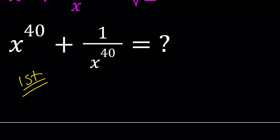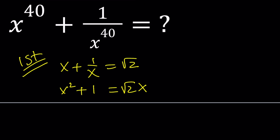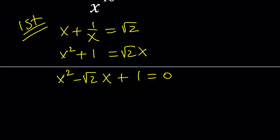I want to solve for x, so x plus 1 over x is equal to square root of 2. Let's go ahead and multiply both sides by x: x squared plus 1 is going to equal square root of 2 times x, and then we can go ahead and solve this as a quadratic. Let's put everything on the same side and then we'll get the solutions.